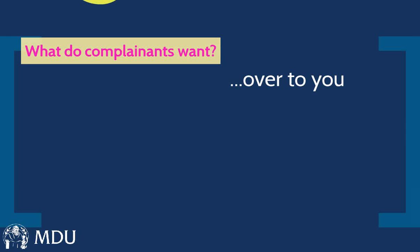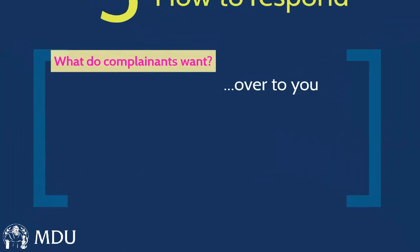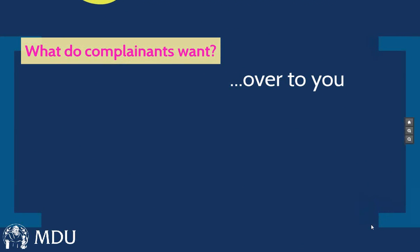I've got here from participants: an explanation of what happened, an honest and open apology, reassurance that it won't happen again. Some are saying money — that can certainly be the case. We've got a few saying financial compensation, others reflecting on wanting a remedy, wanting an honest response, or satisfaction that the issue has been resolved. And again the issue of reassurance that it won't happen again. I think those are all really important themes.